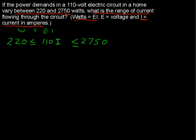Now we can solve this double inequality just by dividing everything by 110. And let's take a look at this right here. This will be 2. So 2 is less than or equal to I is less than or equal to, let's see, 11 goes into 27 twice with 5 left over. That goes in 5. Okay, 25.